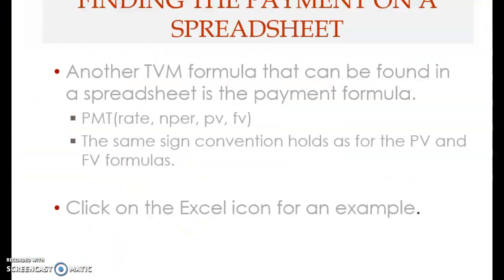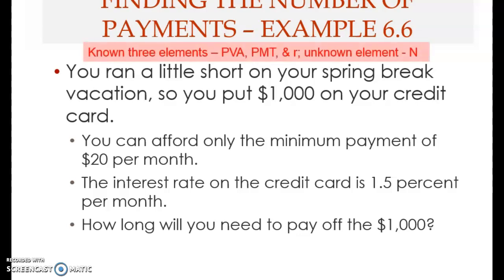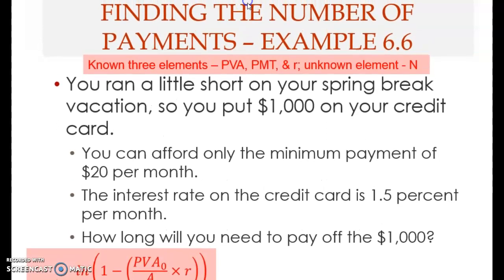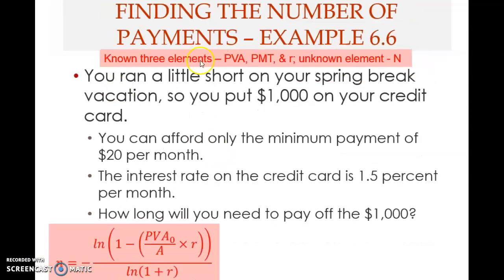We've finished that part, so let's move on. Now we move to another area: finding the number of payments. Previously you determined the payment — now we want to solve for the unknown number of payments or periods. The known elements are the present value of the annuity, the payment, and the interest rate. The unknown element is n — the number of periods or number of payments.